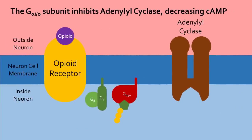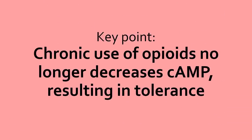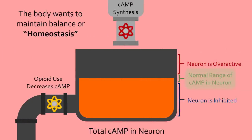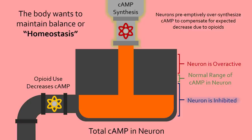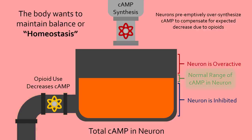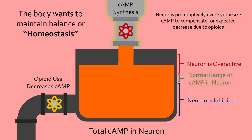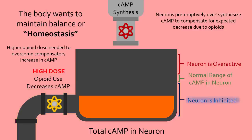The G-alpha subunit of the mu opioid receptor stops cAMP synthesis by interacting with and inhibiting adenylyl cyclase. As cAMP is degraded without being replenished, this results in a decrease in cAMP levels, which combined with changes in calcium and potassium channels shuts neurons off. However, chronic use of opioids eventually no longer decreases cAMP. The body always wants to be in balance, or homeostasis — it's not normal for cAMP in neurons to always be so low, so neurons try to compensate by increasing the activity of adenylyl cyclase preemptively to synthesize more cAMP, overshooting cAMP levels above normal. When opioids are administered, the subsequent decrease in cAMP is cancelled out by the preemptive increase, so neuron cAMP levels remain at a relatively normal value. In order to overcome this anticipatory increase in cAMP, a patient would need a higher dose of opioids to lower cAMP levels below normal and inhibit neurons — this is the main reason why tolerance occurs.